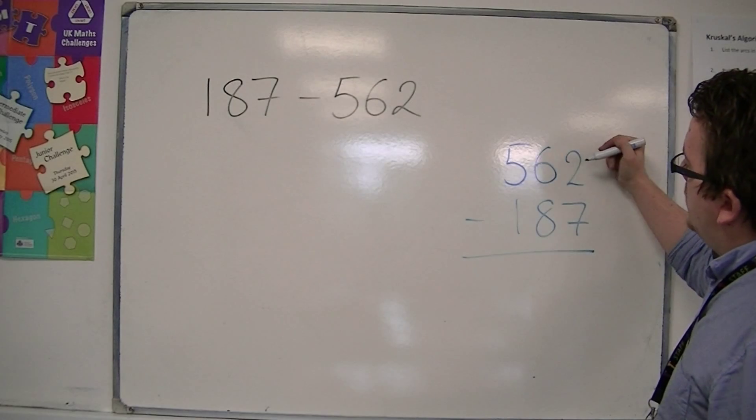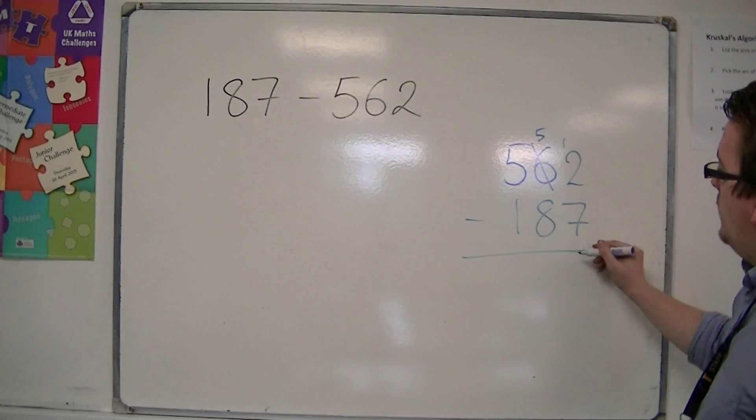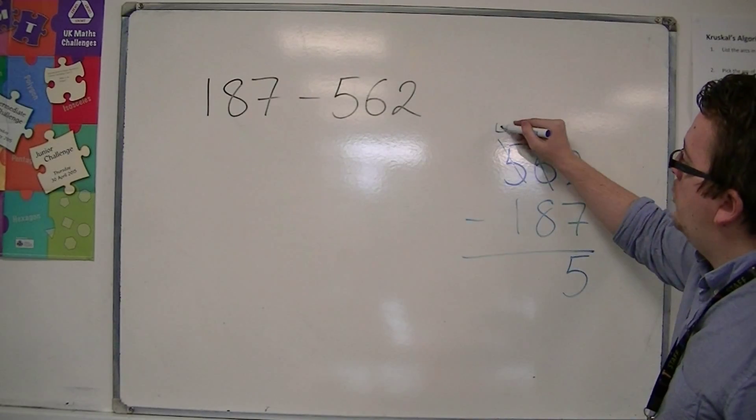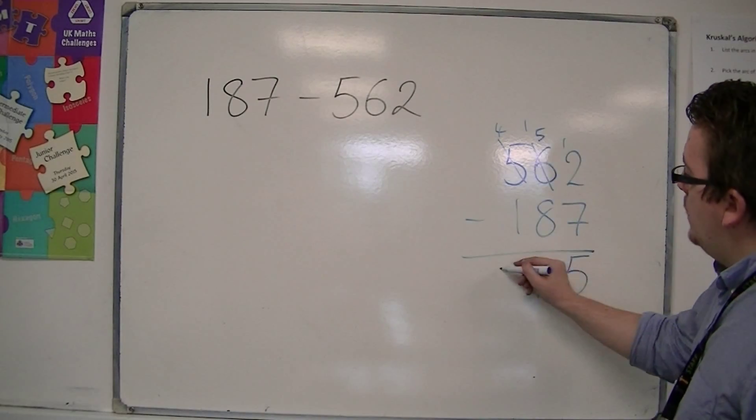2 take away 7 I can't do, so I need to borrow 1 from the 6. So, 12 take away 7 is 5. 5 take away 8 I can't do, so I need to borrow 1. 15 take away 8 is 7, and 4 take away 1 is 3.